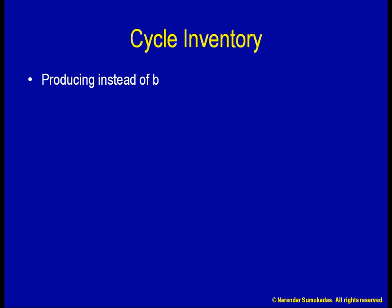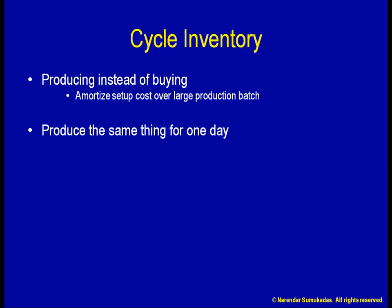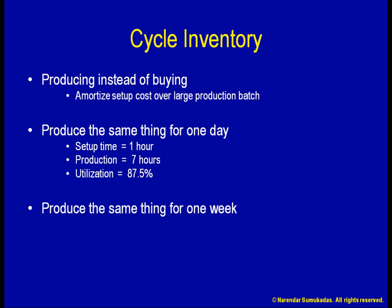The same principle applies if I am producing something instead of buying it. In this case, I want to amortize the cost of setting up a process over a large production batch. Suppose I produce something for a whole day before changing over to something else. It takes me one hour to set up the process, after which I run it for the rest of the day, or seven hours. My utilization is 87.5%. Instead, after setting up the process, if I continue producing the same thing for the rest of the week, or 39 hours, my utilization increases to 97.5%.